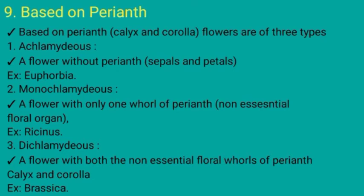Based on perianth — which means Calyx and Corolla — flowers are of three types. Number one, Achlamydous flowers: a flower without perianth, without sepals, and without petals, example Euphorbia. Number two, Monochlamydous flowers: a flower that contains only one whorl of perianth, which is a non-essential floral organ, example Resinous. Number three, Dichlamydous flowers: a flower with both non-essential floral whorls of perianth — Calyx and Corolla — examples Mustard and Brassica.